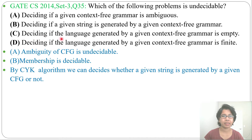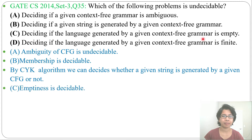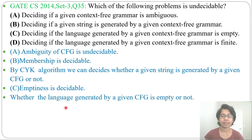Next, option C: deciding if the language generated by a given context-free grammar is empty. This is an emptiness problem. You can check emptiness in a context-free grammar — first remove null productions, then remove unit productions and useless symbols. After that, if it is generating at least one string then it is not empty; if it is not generating any string then it is empty. So emptiness is decidable in the case of a context-free grammar.